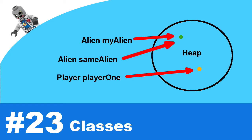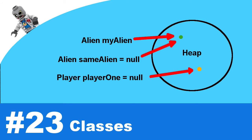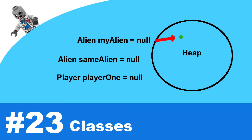You can create references with null values: put the type, put the variable name, put the equals sign, and then put null — that's a null reference. You can then create a new object and assign it to that reference. When you want to delete a reference to the object, you put the variable name equals null, and that cuts the reference. If you cut one reference but another still exists, that object stays around. When you set that last reference equal to null, the object is orphaned in the heap and the garbage collector will get rid of it.